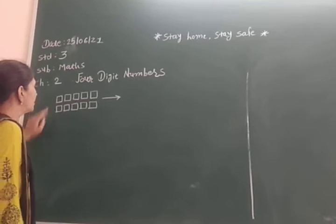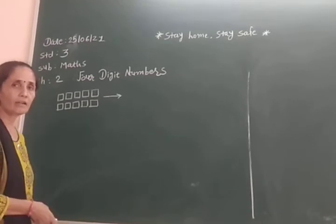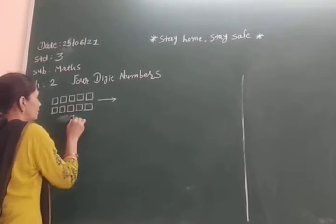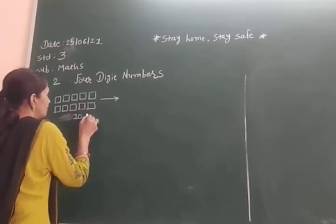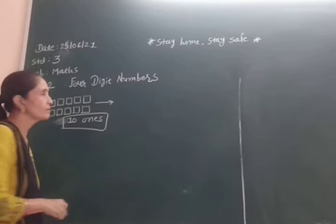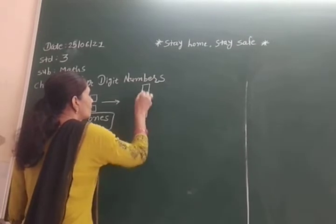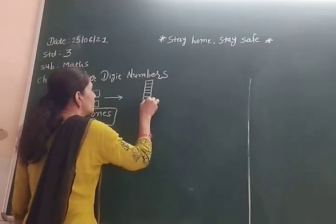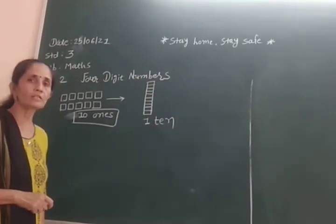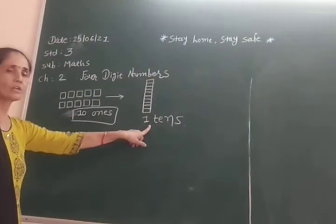Here we have 1, 2, 3, 4, 5, 6, 7, 8, 9, and 10. So ten ones. Ten ones equal one ten. Ten times one is equal to one ten.